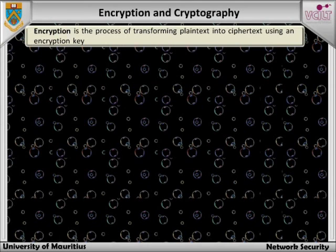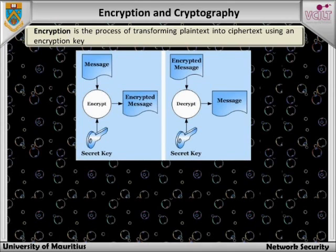Encryption is a process that transforms information — that is, the plain text — into a seemingly unintelligible form, that is the ciphertext, using a mathematical algorithm and some secret information, that is the encryption key. The process of decryption undoes this transformation using a mathematical algorithm in conjunction with some secret value, that is the decryption key, that reverses the effects of the encryption algorithm.